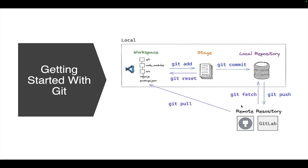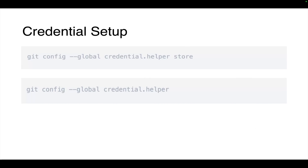If you set up a completely fresh local folder using `git init`, an important step that cannot be overlooked is setting up your credentials. When pushing and pulling to a remote repository, you don't want to type your username and password every time. To avoid that, execute: `git config --global credential.helper store`. This command stores your credentials the first time you enter them. Note that credentials are stored in plain text in a `.credentials` file on your system, not in an encrypted format.